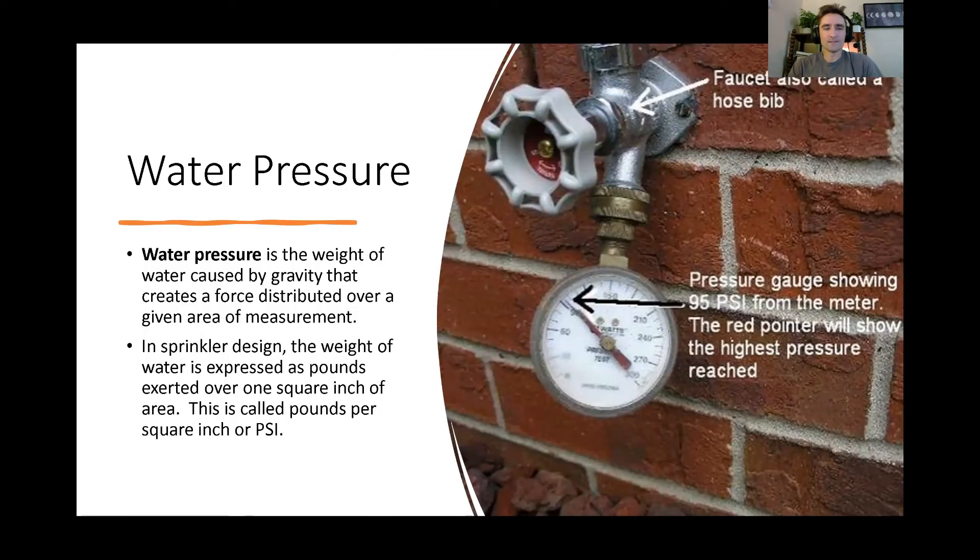Water pressure is the weight of water caused by gravity that creates a force over a specific area. That's the technical definition. And that's hard to understand what it's even talking about. But in sprinkler design, we express this weight of water as pounds per square inch, psi. So for every square inch of area, how many pounds of water is on top of it, pushing it down. And here you can see a hose bib with a pressure gauge. So you put that right up and you get a pressure reading of 95 psi. That is static, does not change. And so every house will have a different water pressure coming into the house.